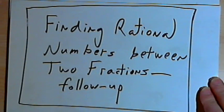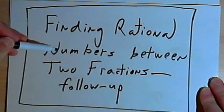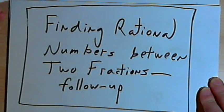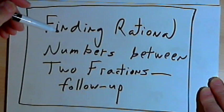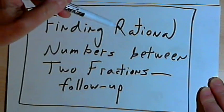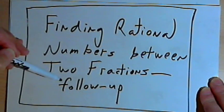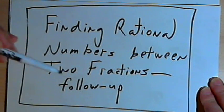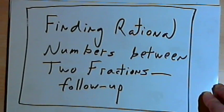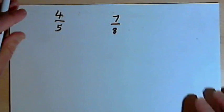This is going to be a follow-up to a previous video about finding rational numbers between two fractions. In that first video I showed two methods for doing this — two ways to find a fraction that would fit in between two other fractions. Somebody asked me to prove that the second method would work, so let me review the second method and then show you how the proof works.